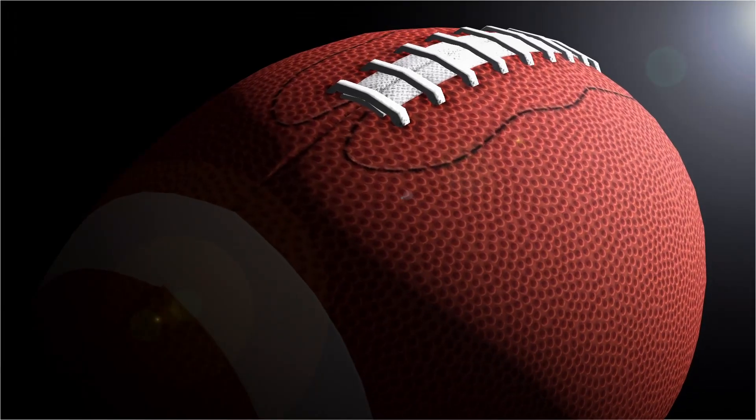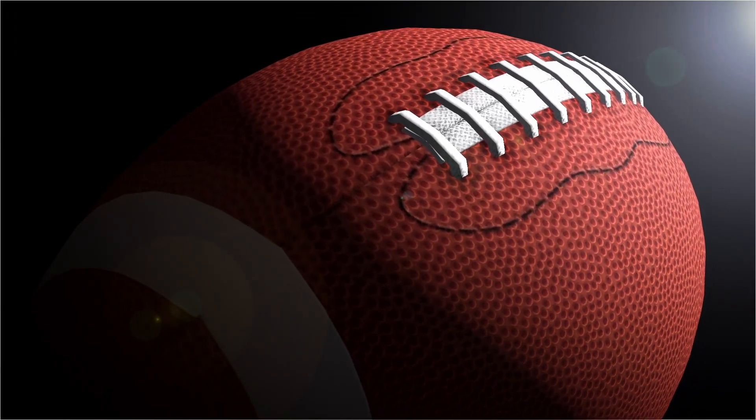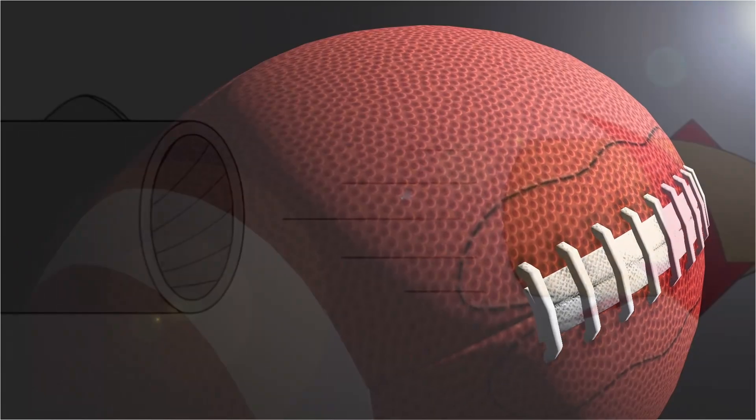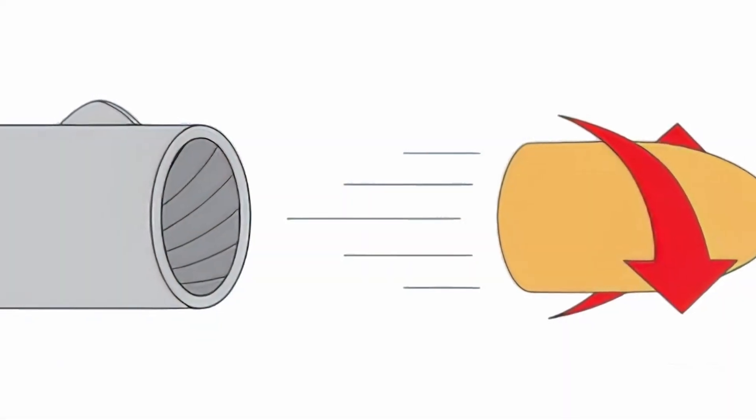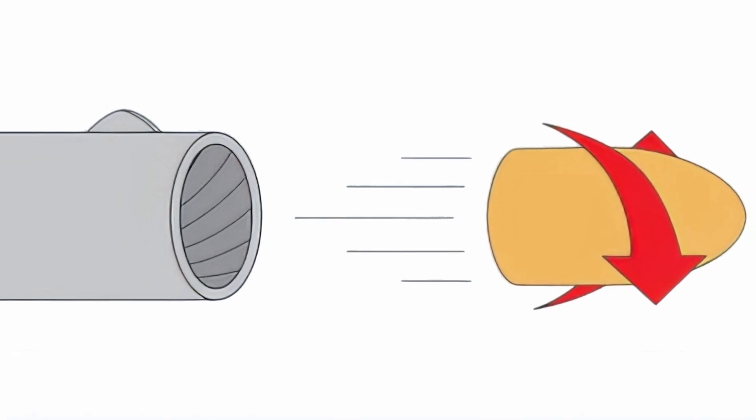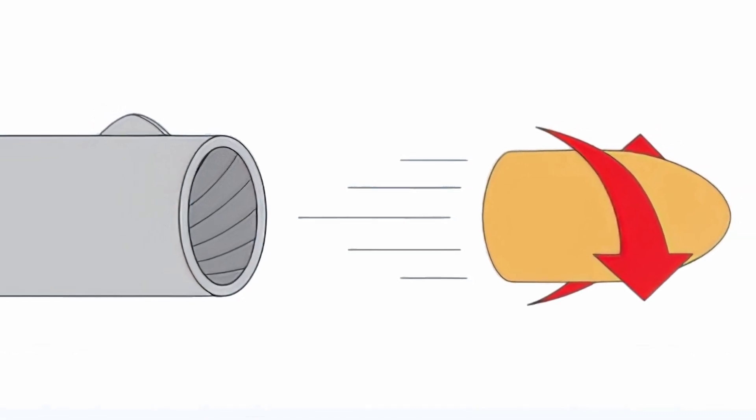The spinning motion imparts a gyroscopic stability to the bullet, much like a spinning top or a football, which helps to keep the bullet on a straight path as it travels through the air. The spinning motion causes the air around it to move in a circular motion, which creates an area of low pressure behind the bullet, reducing drag and allowing it to travel farther and with greater accuracy.